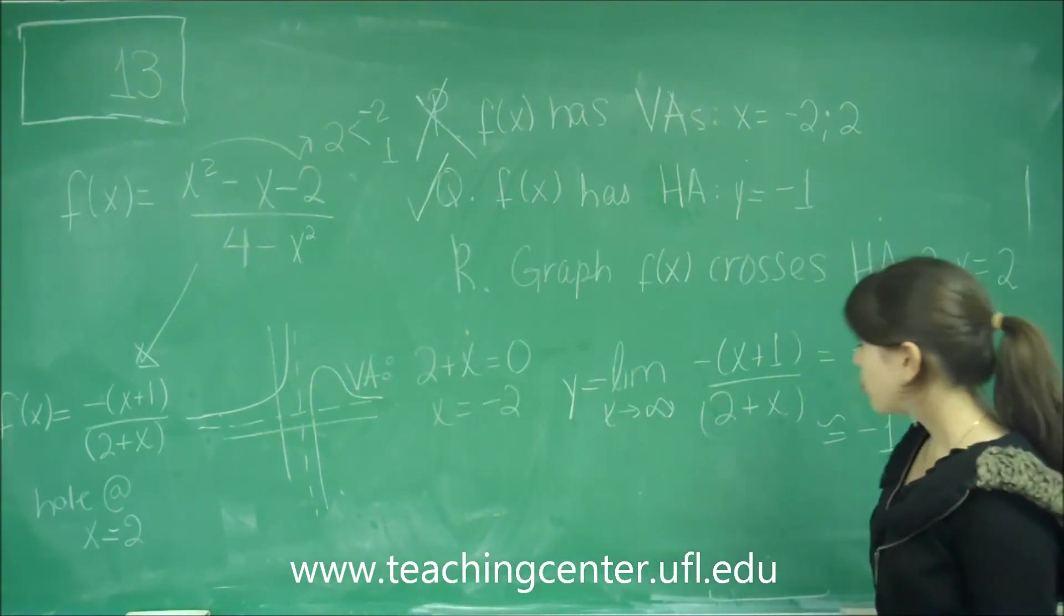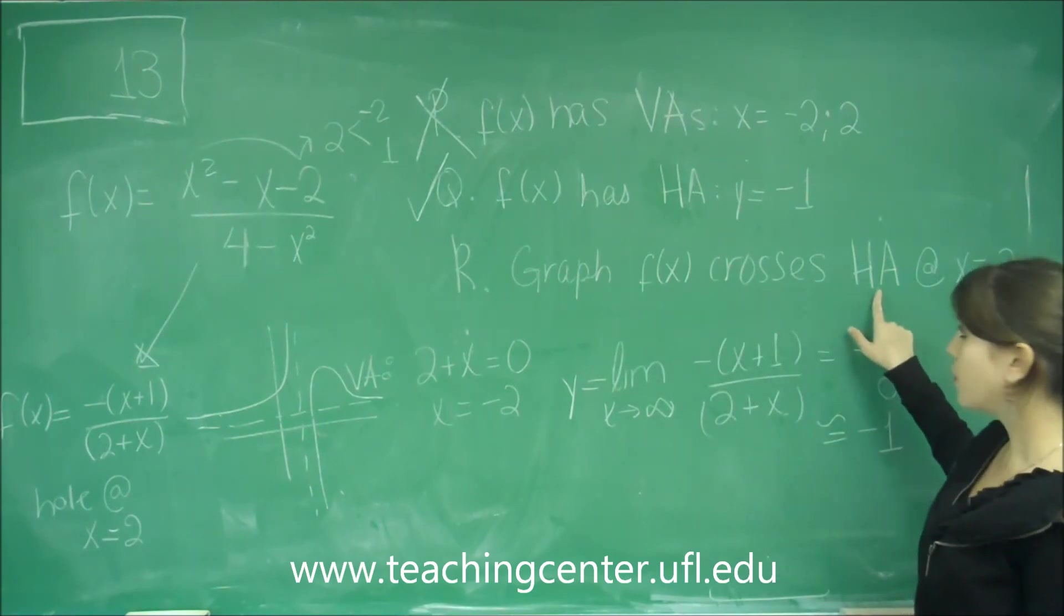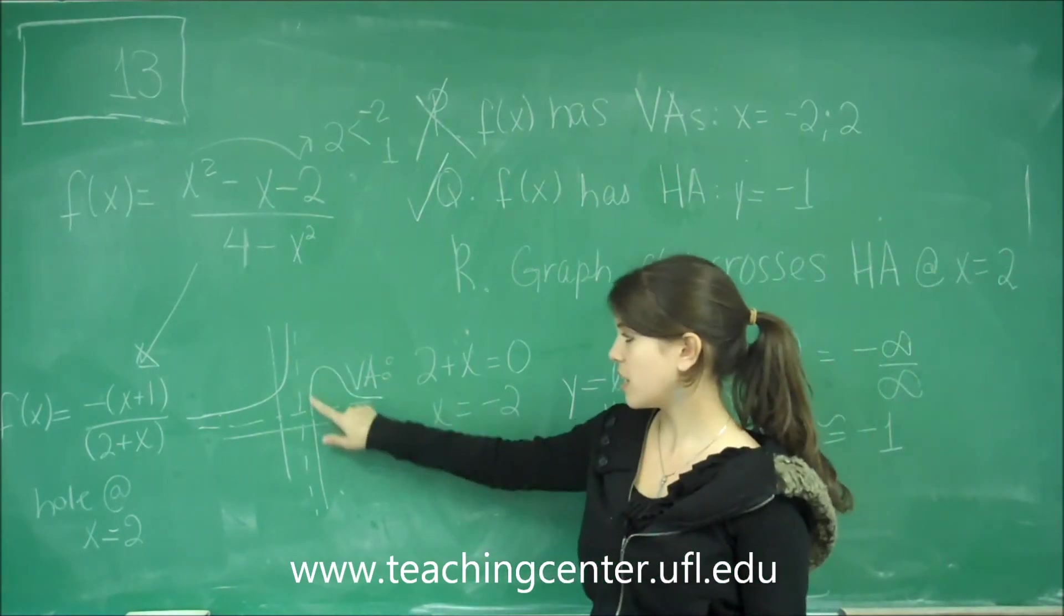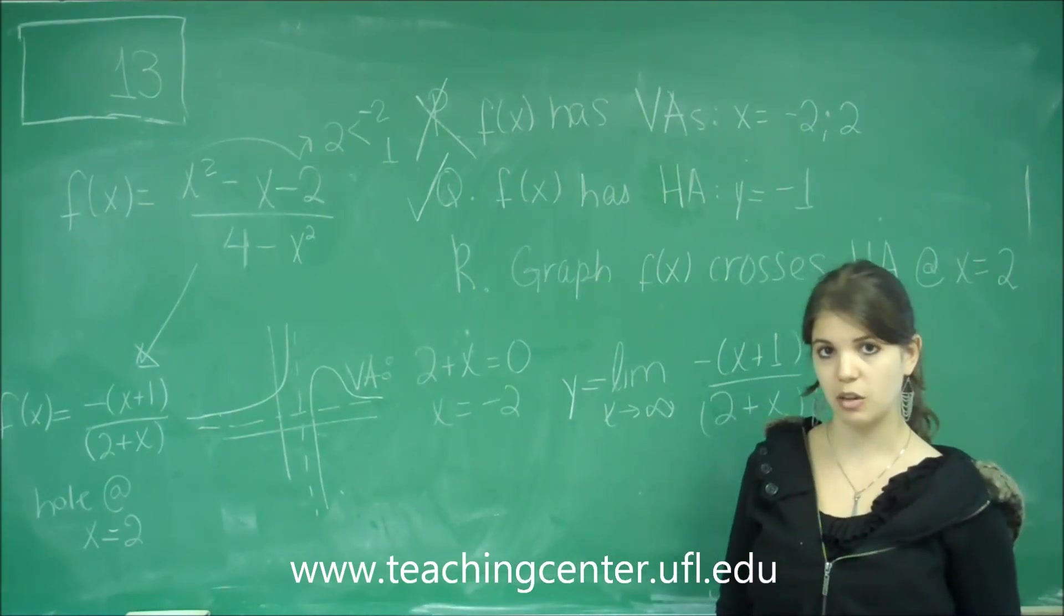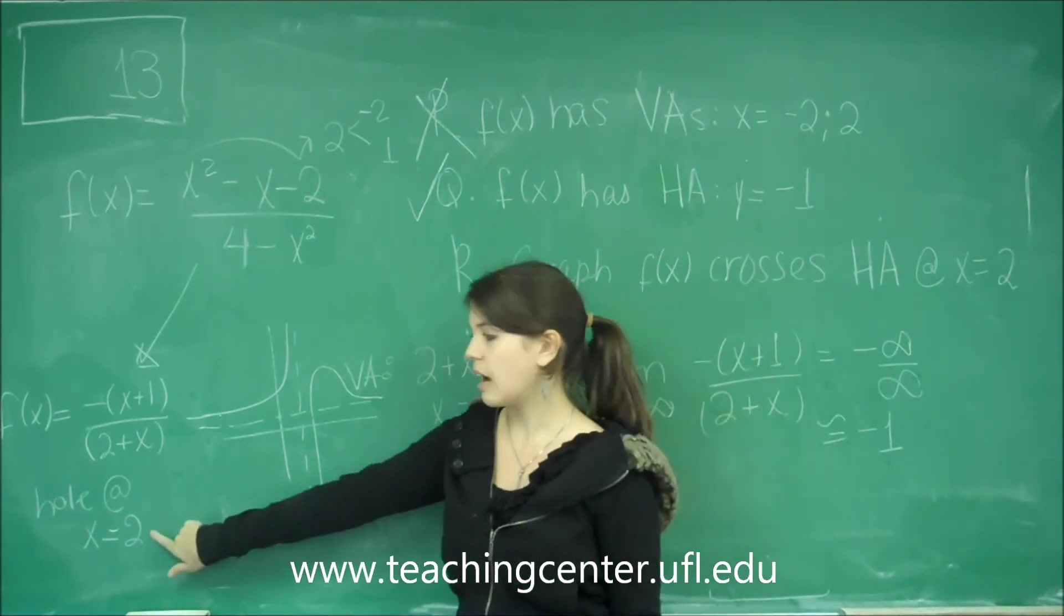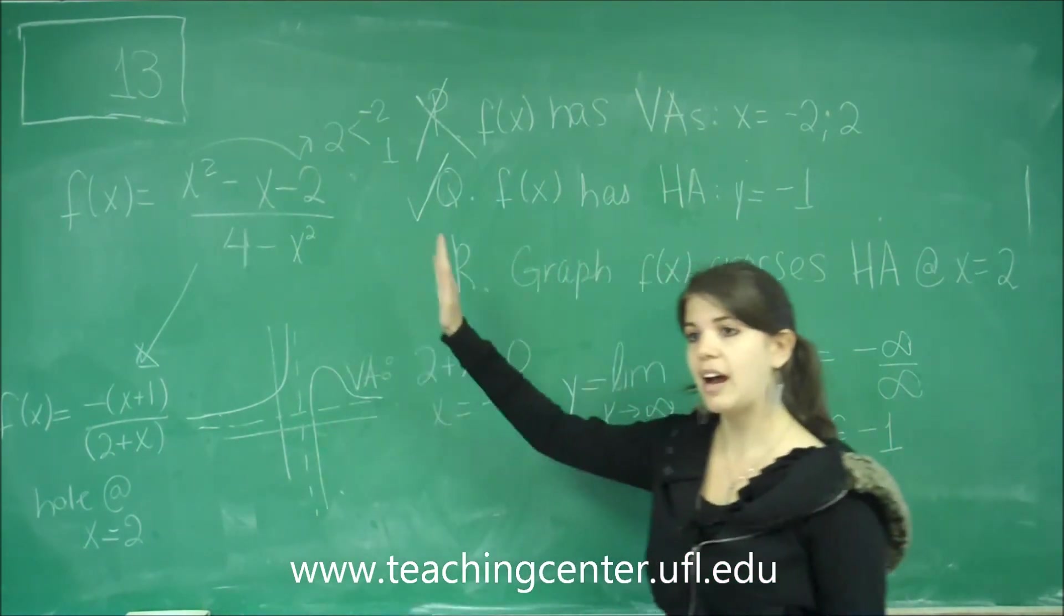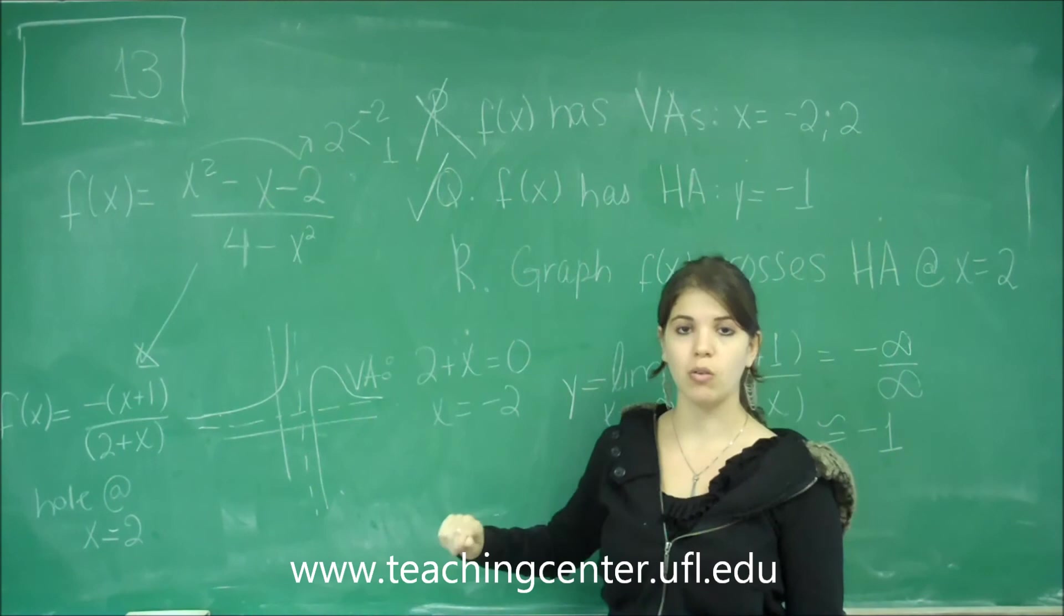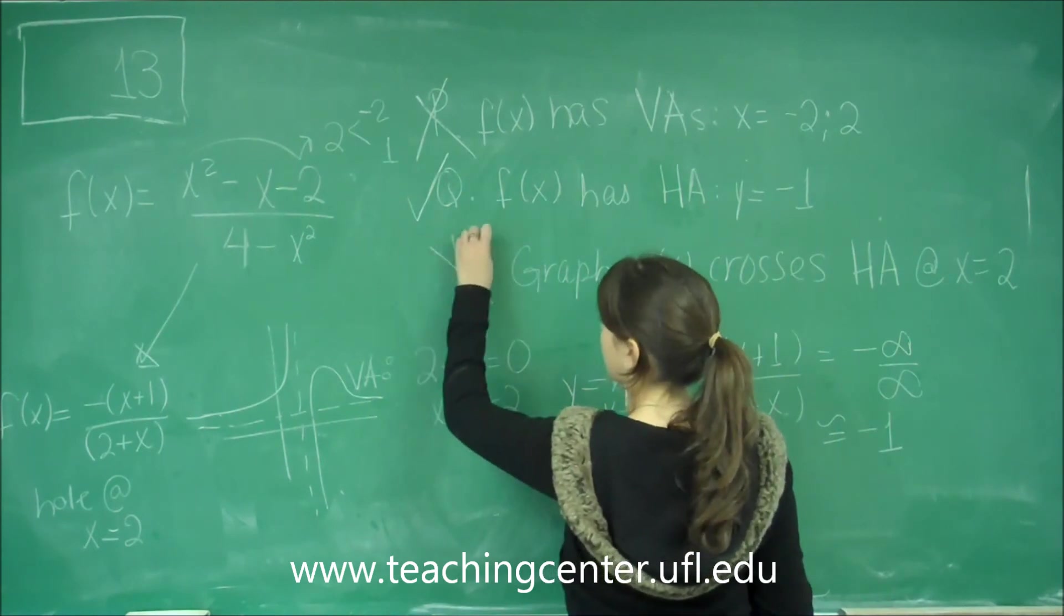And then finally, for choice R, it says the graph of f of x crosses the horizontal asymptote at x equals 2. So as I said, horizontal asymptotes can in fact be crossed. It's a little exception, and this is asking, is it crossing it at x equals 2? So luckily, we've already written something that happens at x equals 2, and that is that there is a hole. Wherever x does not have any part on the f function, because wherever it touches the f function, it'll be a hole. So actually, the graph doesn't cross at x equals 2. So that is incorrect.